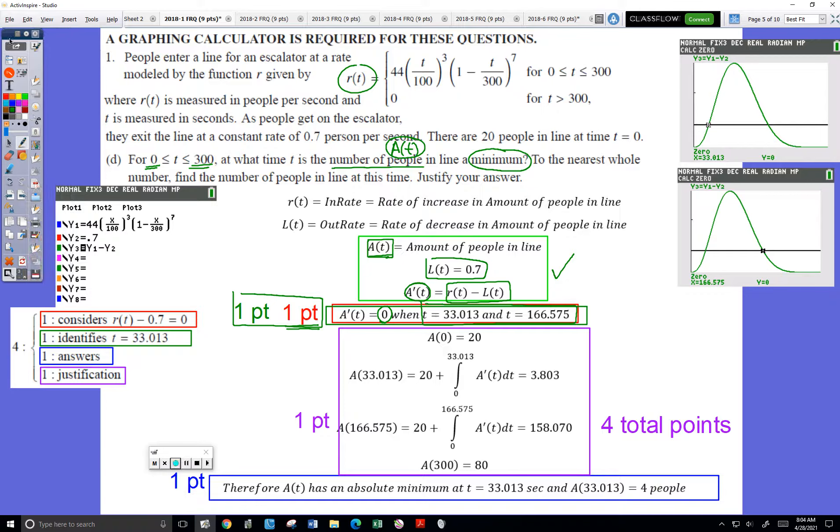I have put in my in-rate and my out-rate. So therefore, Y3 is my overall rate, or A prime. I graph A prime, and I identify the two key times where A prime has a value of zero. That earned me two points.